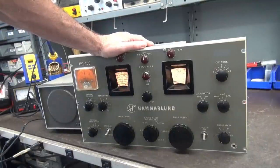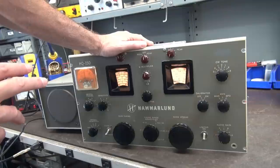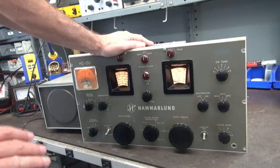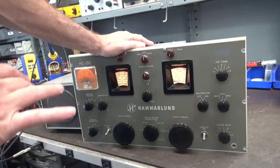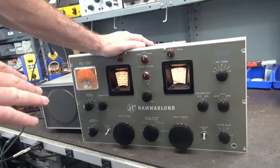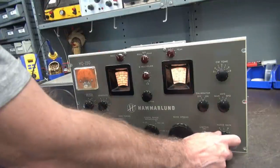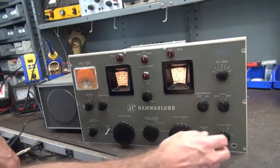So another thing to keep in mind is since we're not turning on and off the B+, the HQ-150 will be much more stable because the voltage regulators and all your oscillators are still seeing that B+, and they're stabilized. When you turn on and off the B+, everything has to start back up, all right?